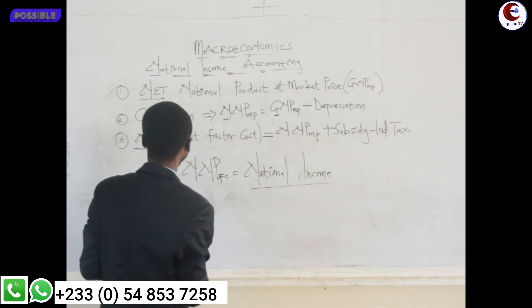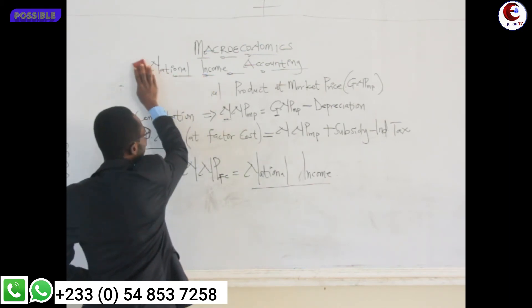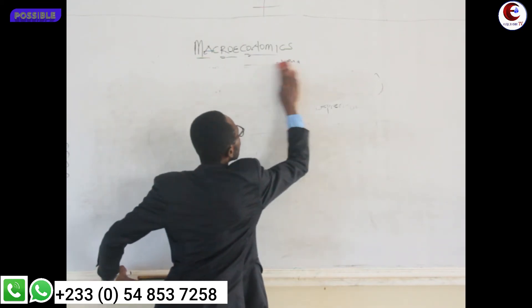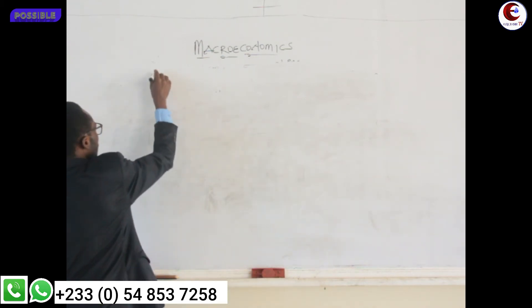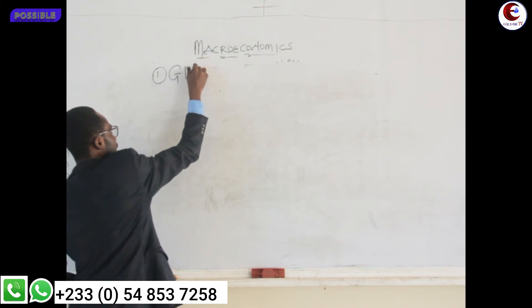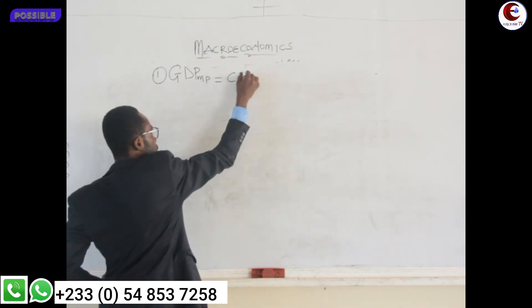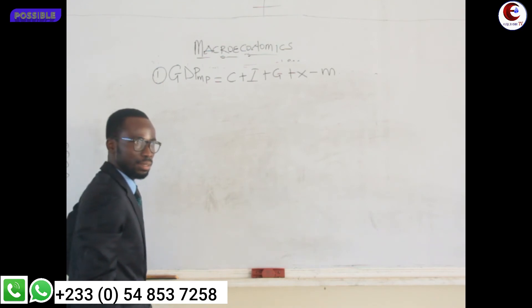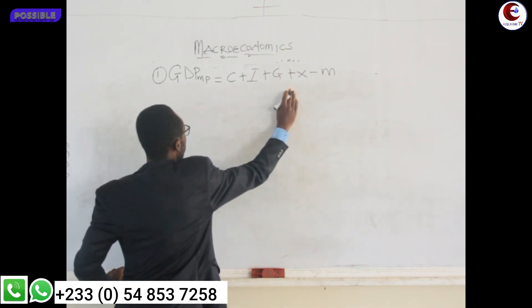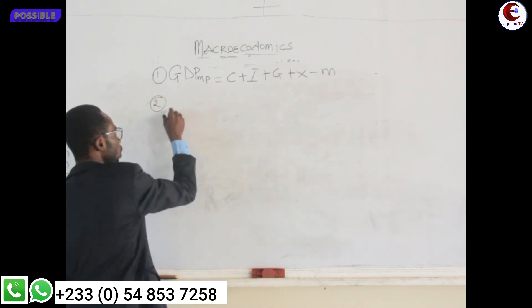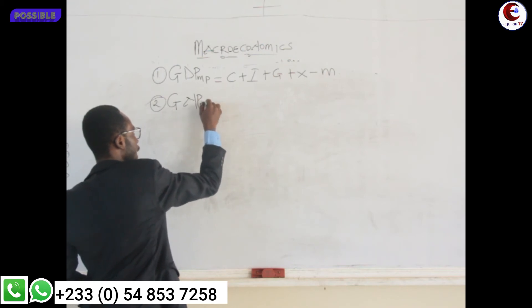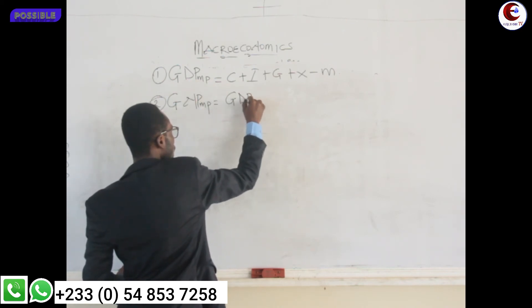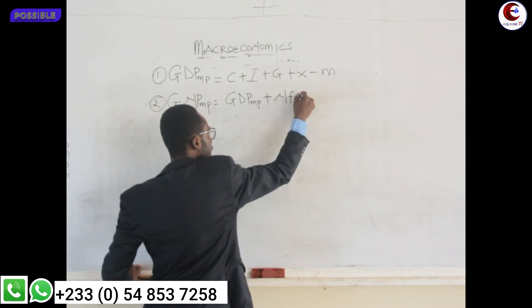Closing chapter two of these formulas, let us look at the summary of what we have done so far. Number one: GDP at market price is equal to C plus I plus G plus X minus M. Number two: GNP at market price is equal to GDP at market price plus net factor income from abroad.